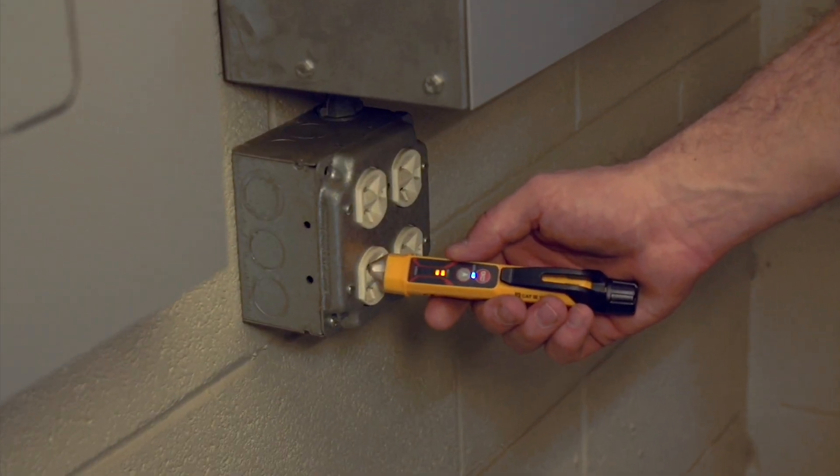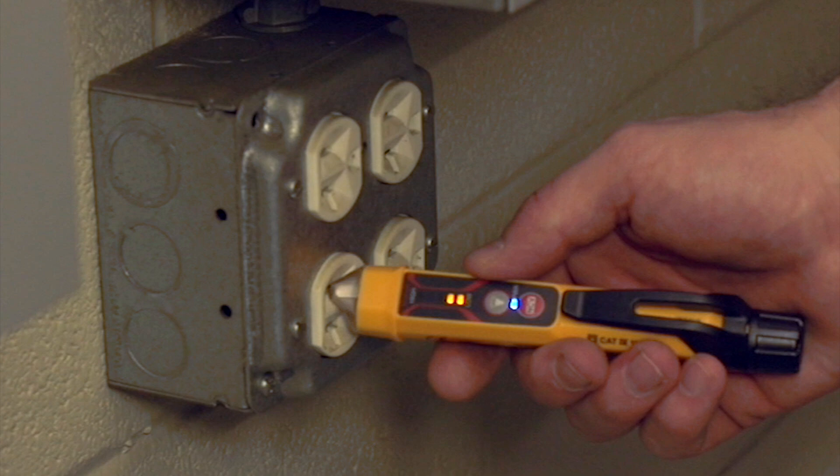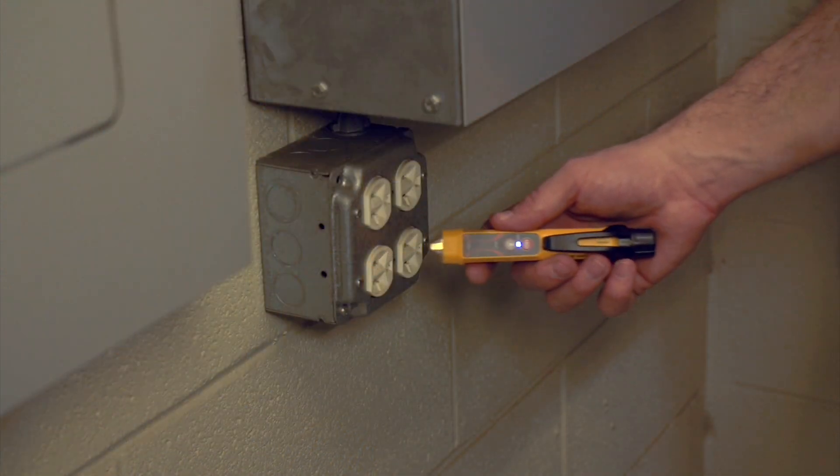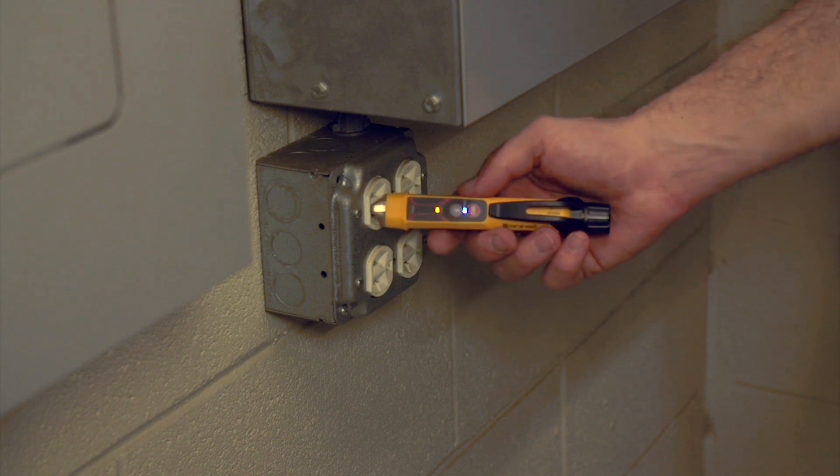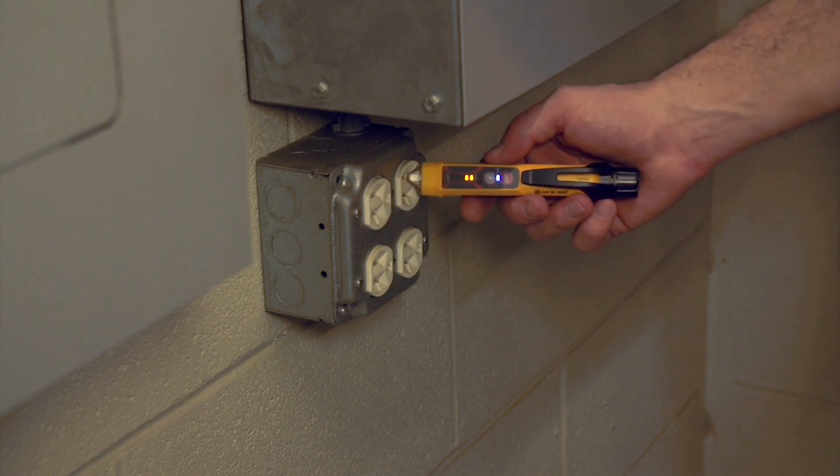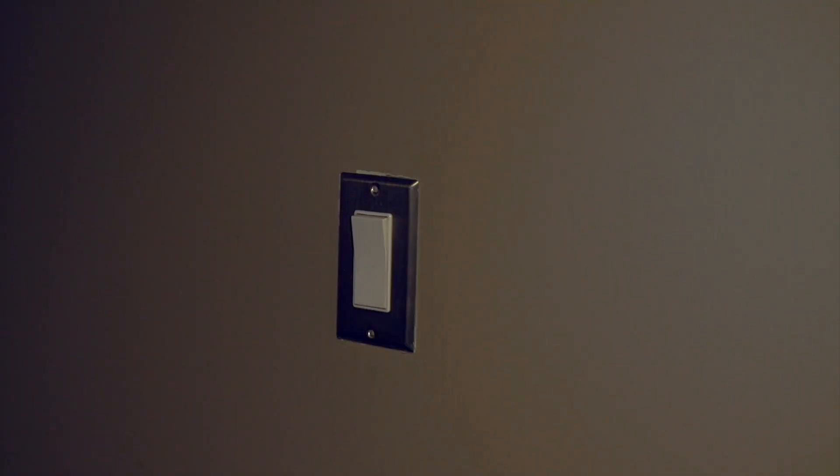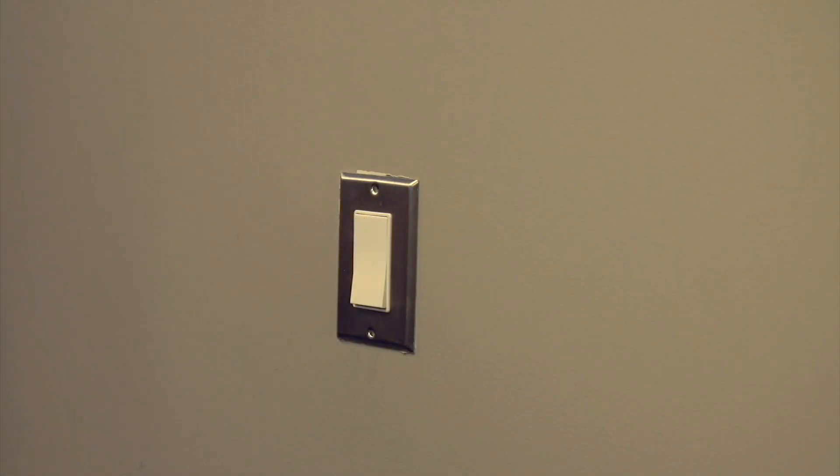When testing an electrical outlet or receptacle, the tip just needs to be placed on the faceplate near the smaller plug slot. But it's a good idea to test all slots on the outlet or receptacle just in case they were wired incorrectly, differently, or on different circuits. If the receptacle is connected to a wall switch, make sure the switch is on during testing.